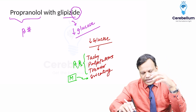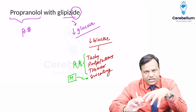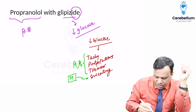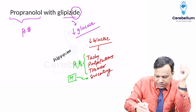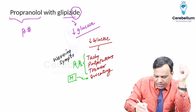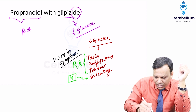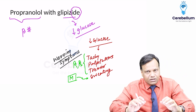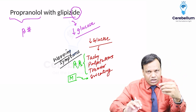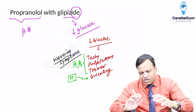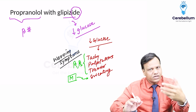Tachycardia, palpitations, tremors, and sweating are called the warning symptoms of hypoglycemia. Whenever any person with diabetes develops hypoglycemia, these symptoms appear, and the person can take sugar or a biscuit to reverse the hypoglycemia.